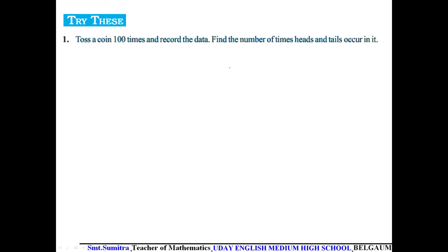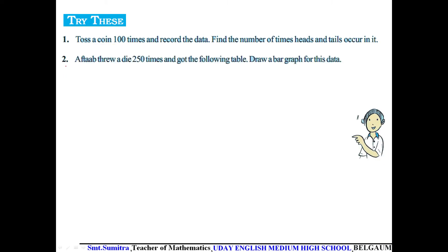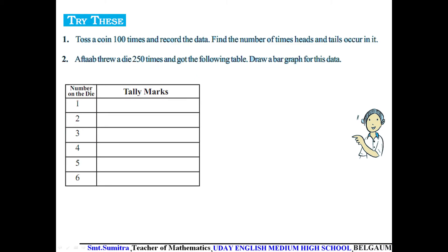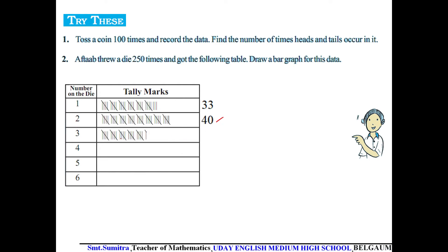Here is another example: Aftab threw a die 250 times and recorded the following data. We need to draw a bar graph for this data. Using tally marks, we find: 1 occurred 33 times, 2 occurred 40 times, and 3 occurred 47 times.